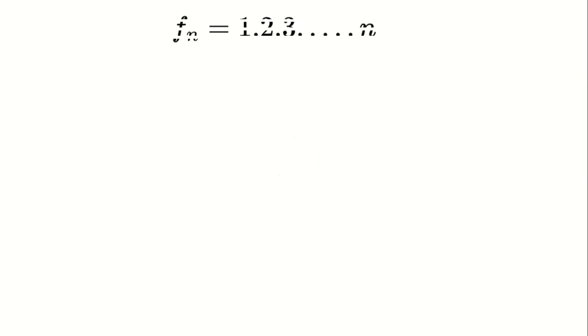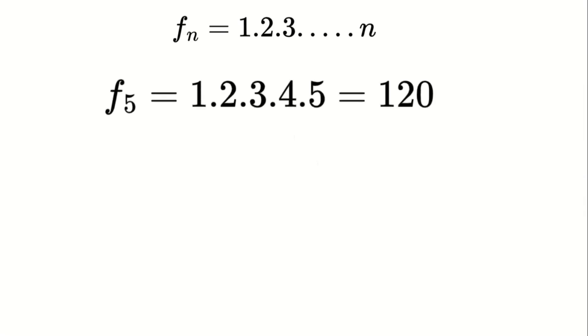To start, we all know what a factorial is. The factorial of a positive integer n is the product of all natural numbers up to n. For instance, the factorial of 5 is the product of 1, 2, 3, 4, and 5, which equals 120.